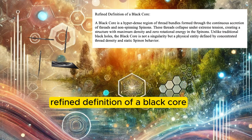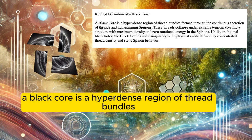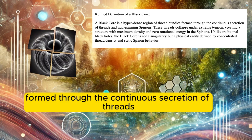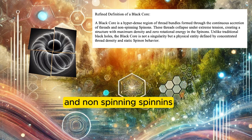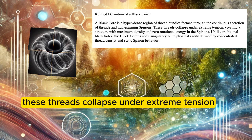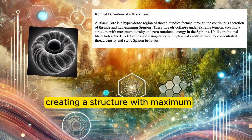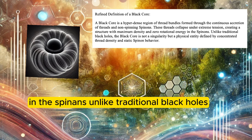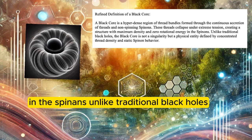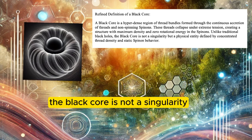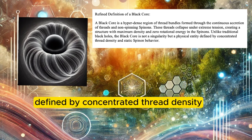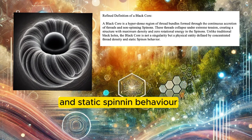Refined definition of a black core. A black core is a hyperdense region of thread bundles formed through the continuous accretion of threads and non-spinning spin-ins. These threads collapse under extreme tension, creating a structure with maximum density and zero rotational energy in the spin-ins. Unlike traditional black holes, the black core is not a singularity but a physical entity defined by concentrated thread density and static spin-in behavior.